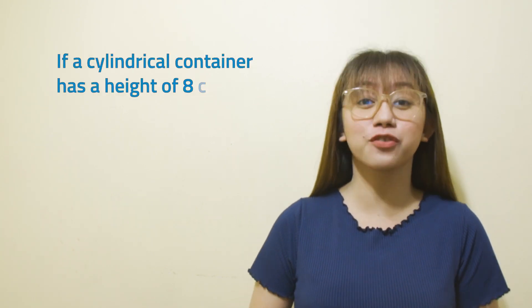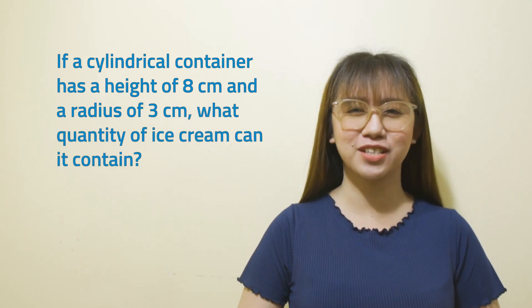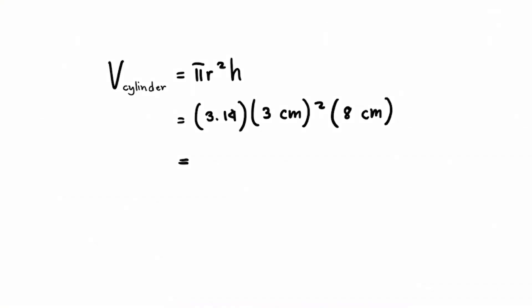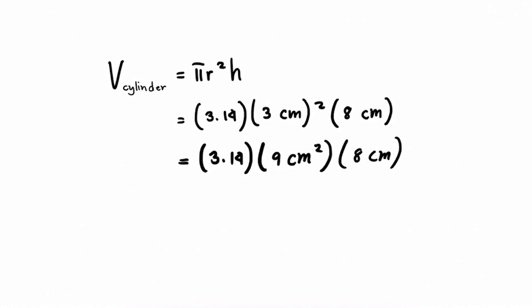Let's try this example. If a cylindrical container has a height of 8 centimeters and a radius of 3 centimeters, what quantity of ice cream can it contain? The volume of the cylindrical container equals the quantity of ice cream that can fill it. Substituting pi = 3.14, radius = 3 cm, and height = 8 cm: 3.14 times 9 cm² times 8 cm. Thus, the container can hold 226.08 cubic centimeters of ice cream.